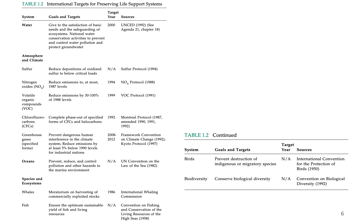The United Nations has put targets for preserving various life support systems, such as water, nitrogen oxide cycling in terms of air quality, ocean preservation measures to preserve both water quality within the ocean and fish production, and species and ecosystem targets for whales. Moratoriums on whale harvesting for many countries in 1986 through the International Whaling Commission. Sustainable fishing guidelines, migratory bird protections, and biodiversity conservation areas to protect important biodiverse areas within the continent.